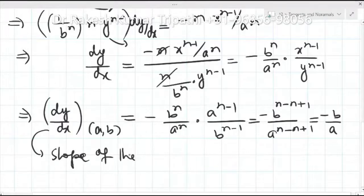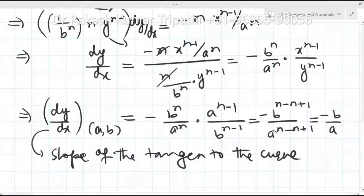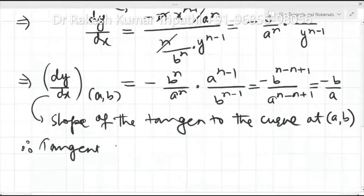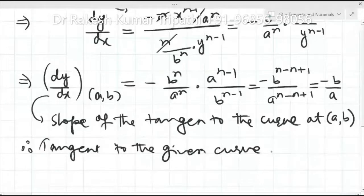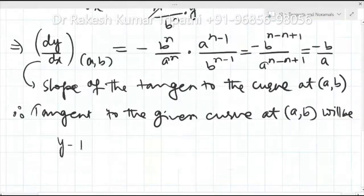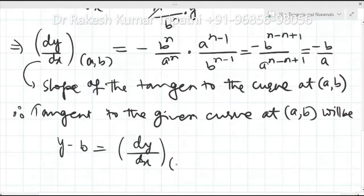Now we find the equation of the tangent to the given curve at (a, b). Using the slope-point form of a line: y − b = (dy/dx at (a,b))·(x − a), which is a well-known form used to find the tangent.